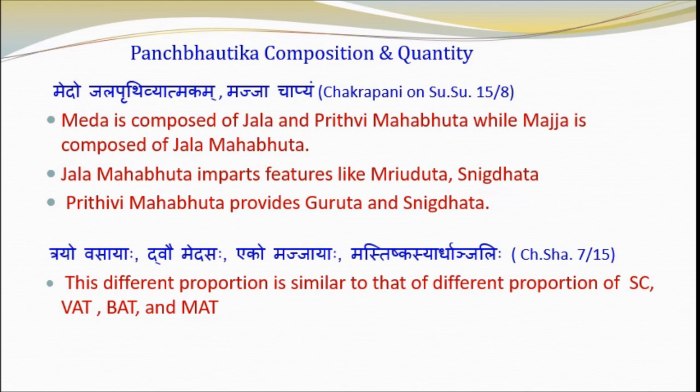This dissimilar proportion is similar to the different proportions of subcutaneous white adipose tissue, brown adipose tissue and visceral adipose tissue, where subcutaneous white adipose tissue is about 85% of total adipose tissue, visceral white adipose tissue is around 10%, and brown adipose tissue is less than the remainder.